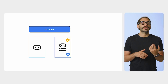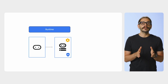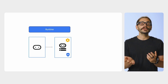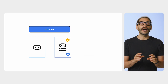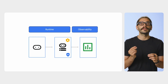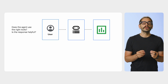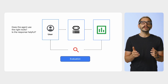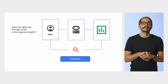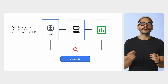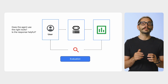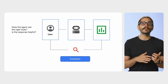First, the Runtime. It is the core managed service that deploys and scales your agent. It handles containerization, security, and gives you out-of-the-box observability with Cloud Logging, Monitoring, and Tracing. Once it's running, how do you know if your agent is actually any good? That's where the Quality and Evaluation Services comes in — it's integrated to help you measure agent quality and even optimize its performance over time.